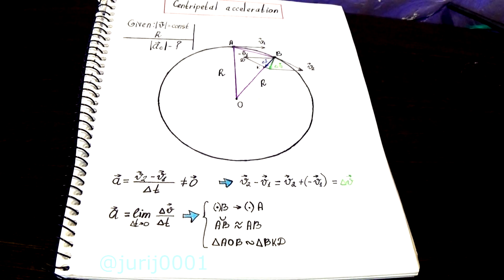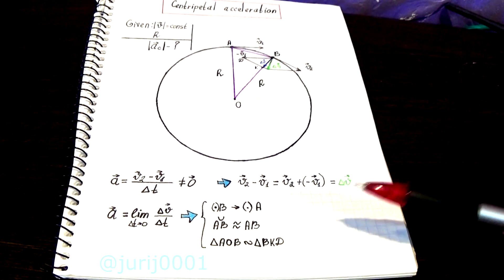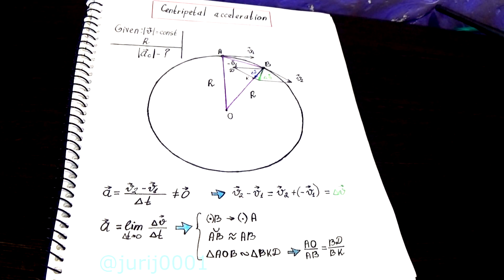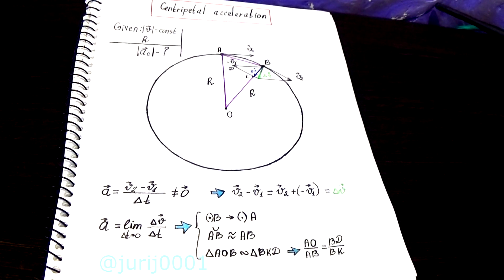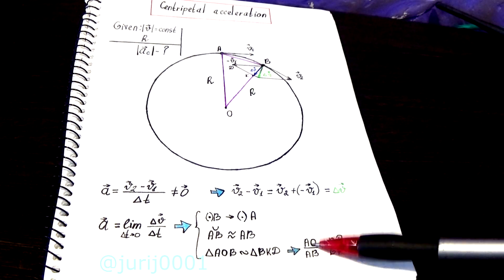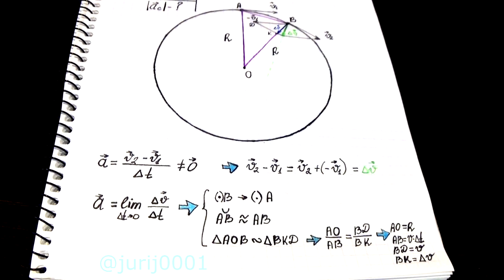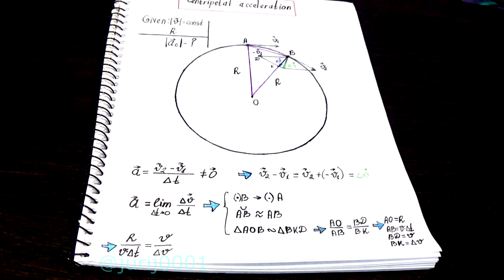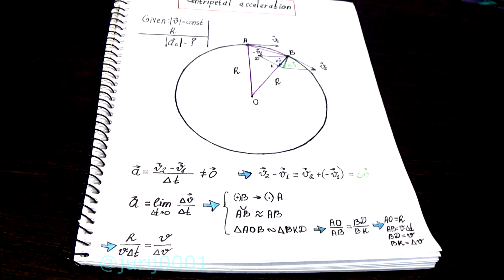And the triangle AOB will be similar to the triangle BKD. From the similarity of triangles, follows the similarity of the corresponding sides. Let's describe what AO, AB, BD and BK. Now, by simple mathematical transformation, we get the acceleration formula.